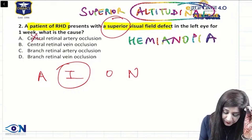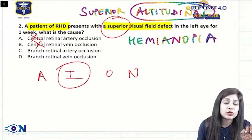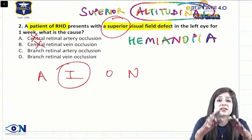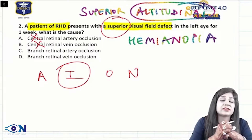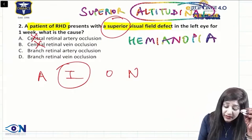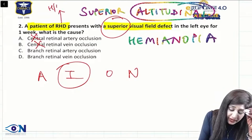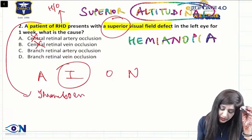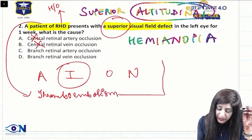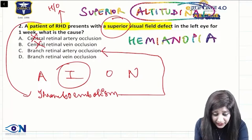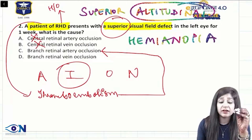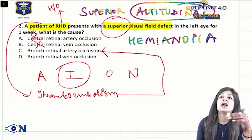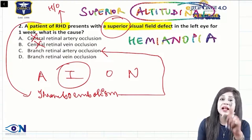That is why we consider either branch retinal artery occlusion or branch retinal vein occlusion. There was a lot of controversy when this question came up — many people answered artery occlusion and many answered vein occlusion. Because it is sectoral involvement, we can completely rule out central artery occlusion and central vein occlusion, leaving us with branch retinal artery or vein occlusion.